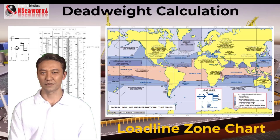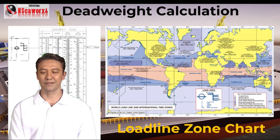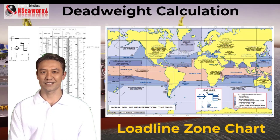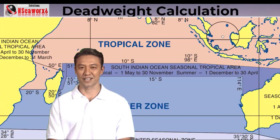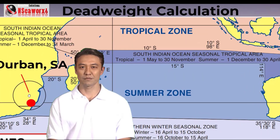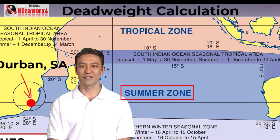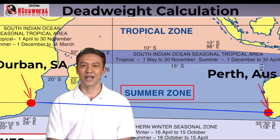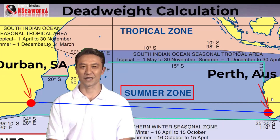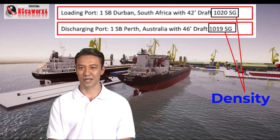First, we have to check in parallel our load line zones. In this sample, I am showing you a load line zone chart. Here we can see where the vessel is loading and where it is going to discharge its cargo. The loading port is Durban, South Africa, which is shown by this red mark, and as we can see, it is located within the summer zone. The discharging port is Perth, Australia, which is also located well within the boundaries of the summer zone. Bear in mind that in this example, the density at the loading port is 1.020, whilst the density at the discharge port is 1.019.